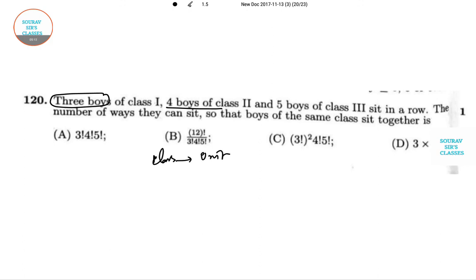Class equals unit. So therefore there are three units which can be permutated in 3! ways. So now class 1 boys can be permutated among themselves in 3! ways.